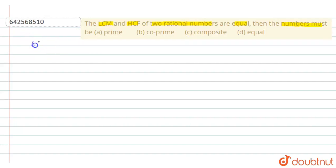Here we will use the formula: LCM into HCF is equal to product of numbers. Let the numbers be A and B. LCM of A and B is equal to HCF of A and B. This is given to us.